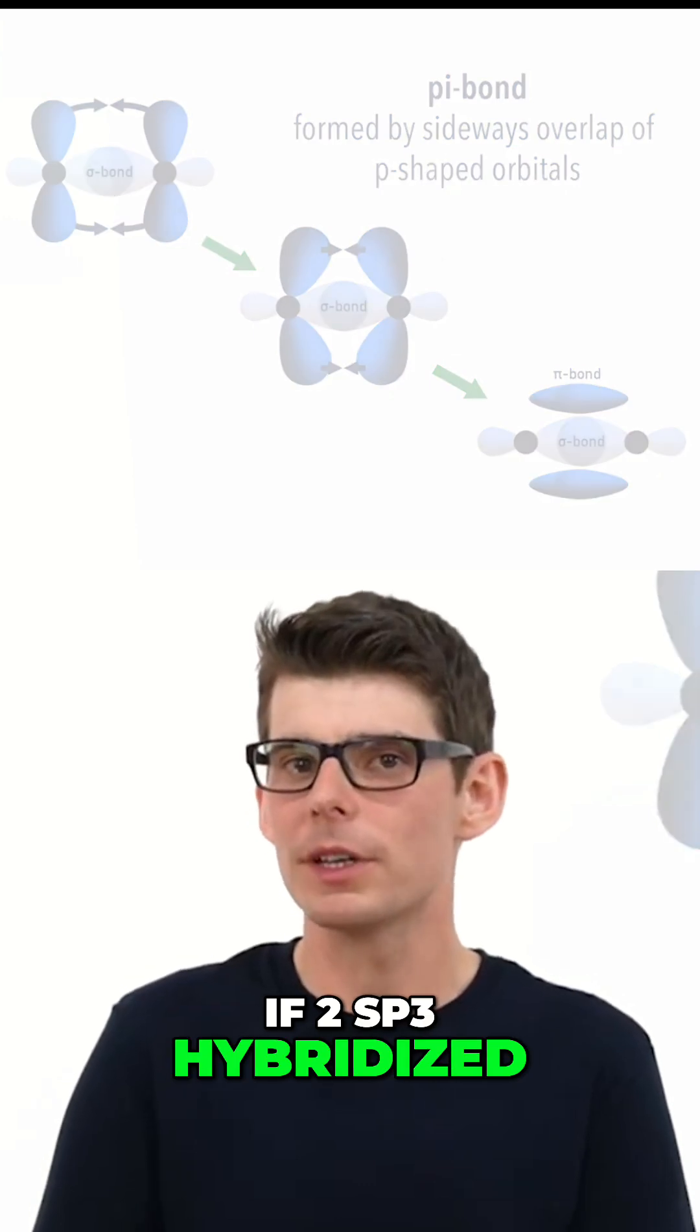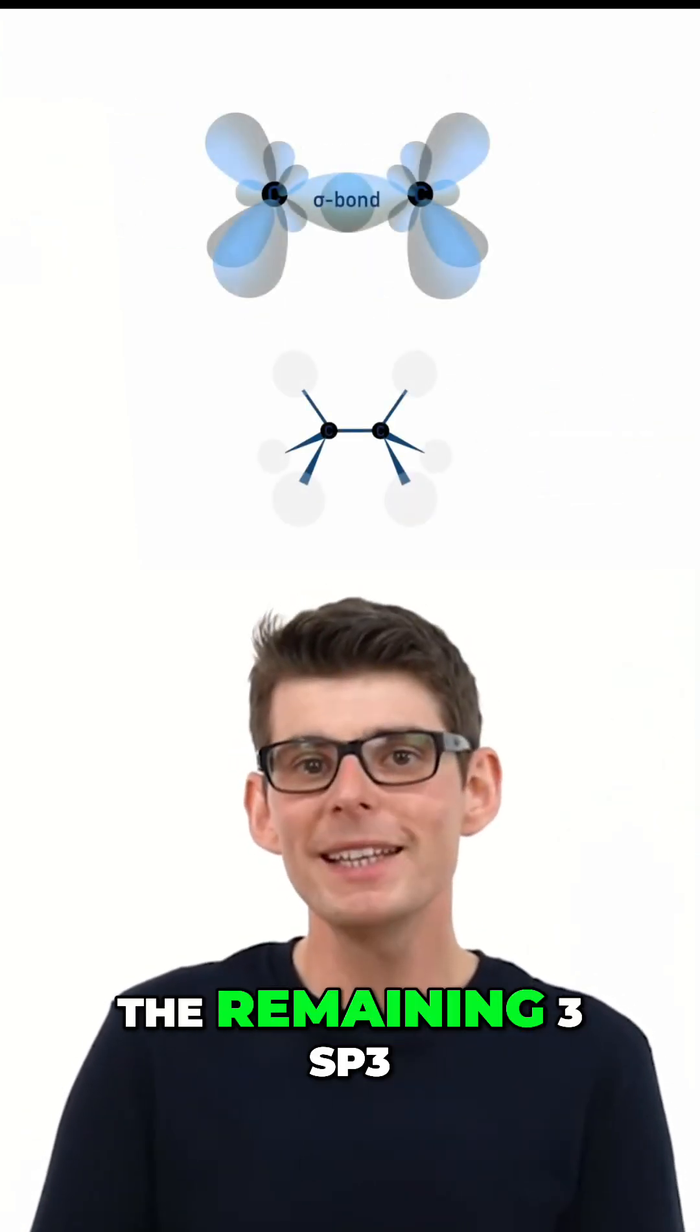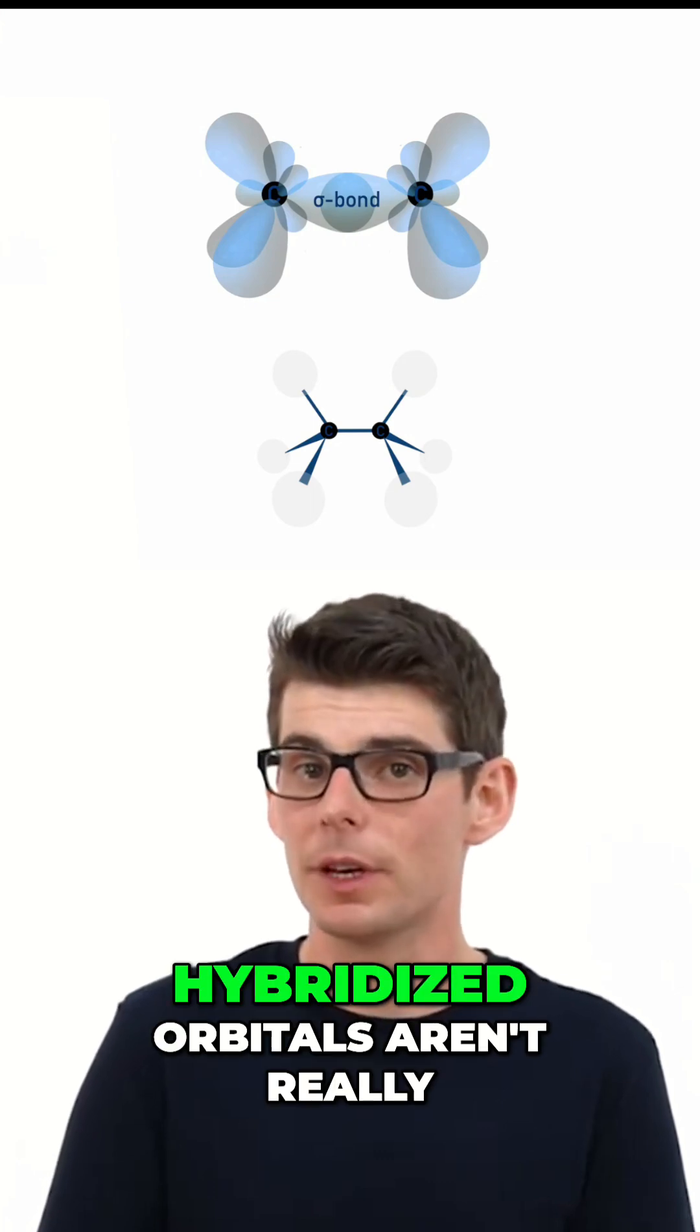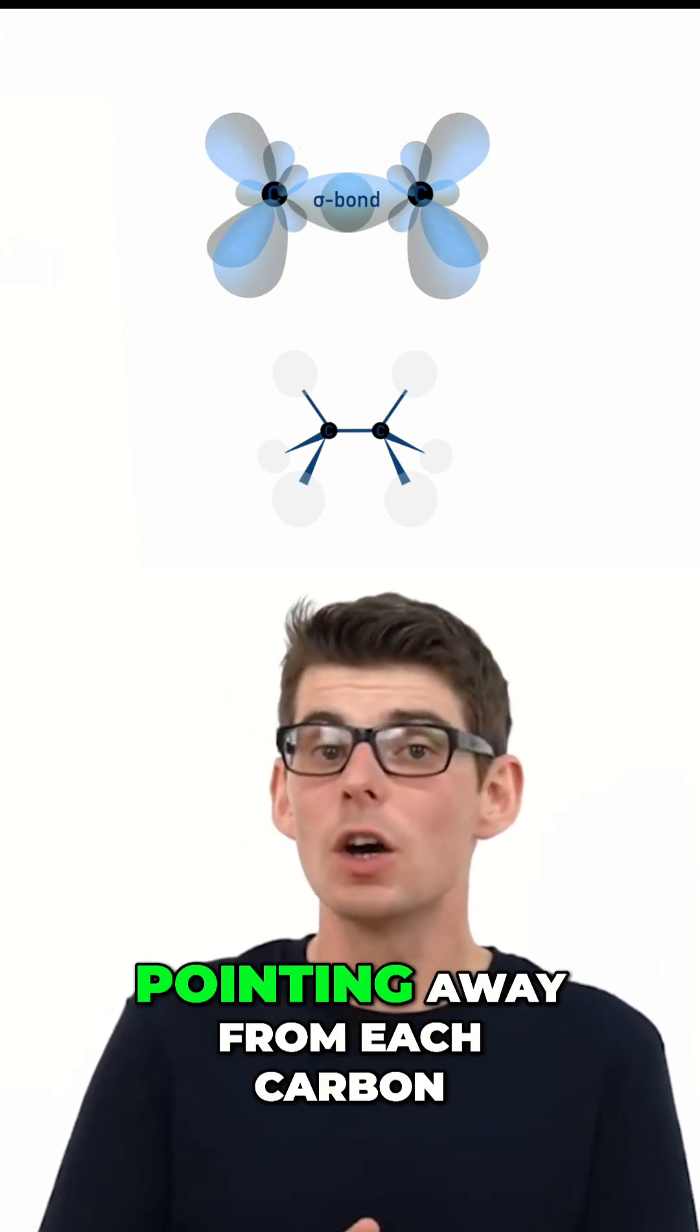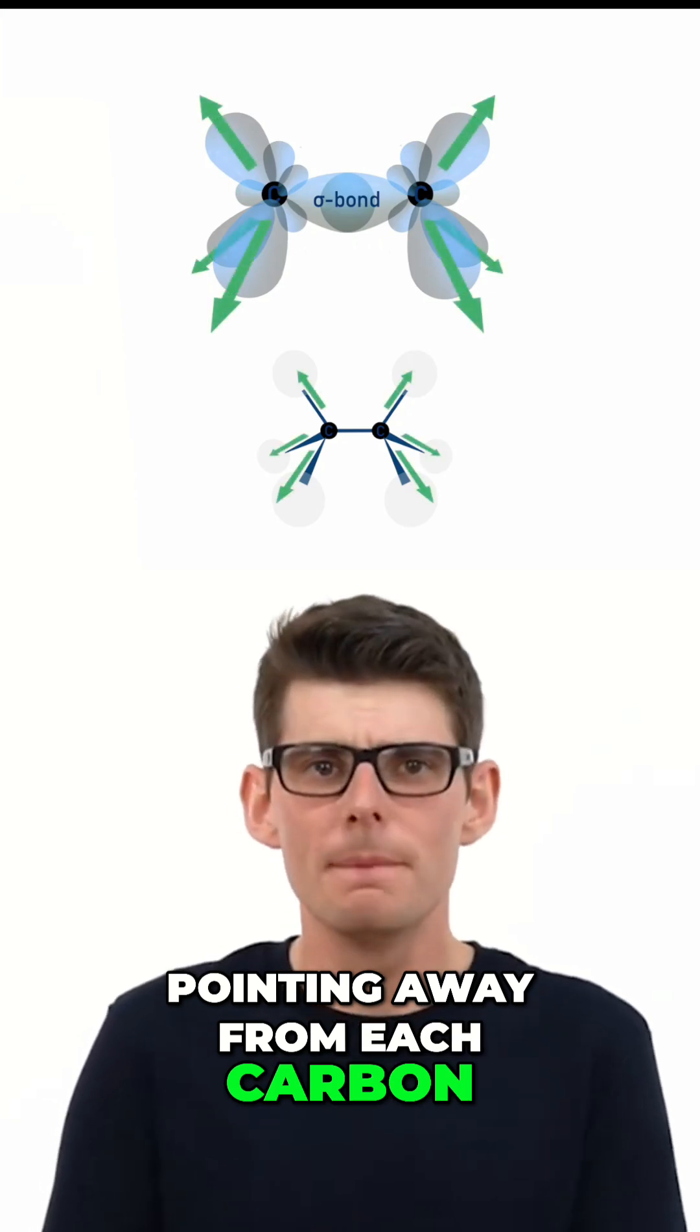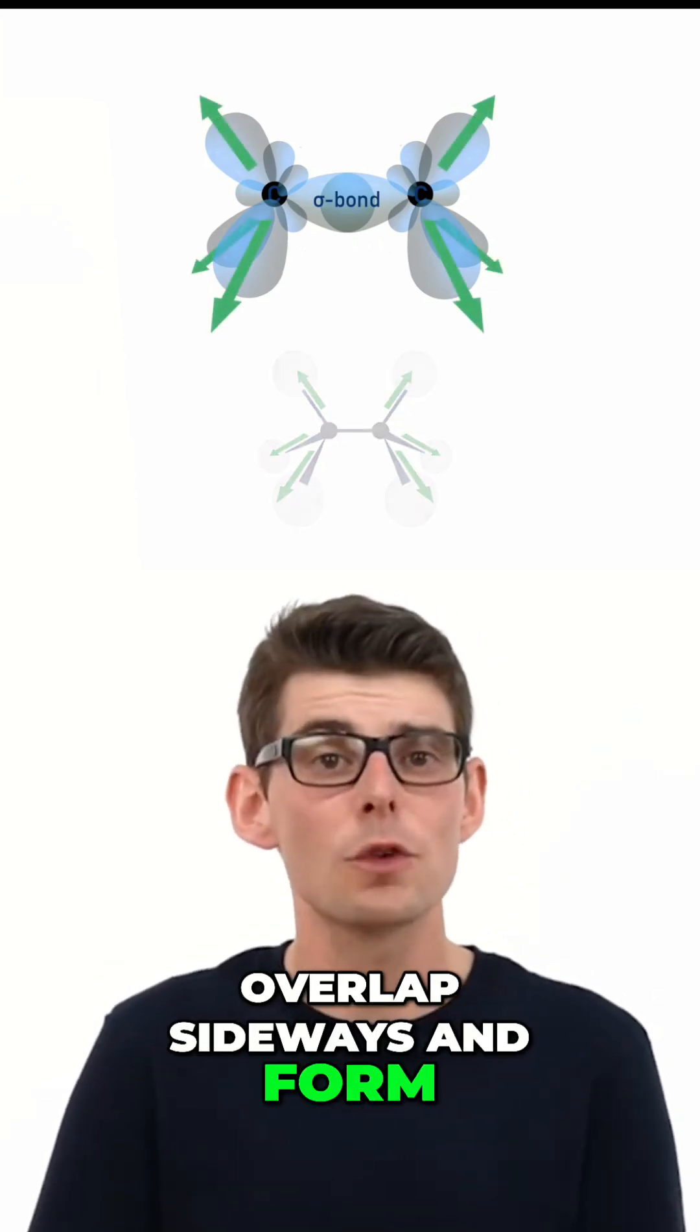If two sp3 hybridized carbon atoms bond together with a sigma bond, the remaining three sp3 hybridized orbitals aren't really p-shaped and they are all pointing away from each carbon, meaning there is no way that two can overlap sideways and form a pi bond.